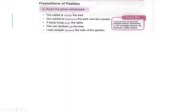Read the given sentences. The rabbit is under the bed. Our school is between the park and the market. A lamp hung over the table. The cat climbed up the tree. I saw people around the side of the garden.